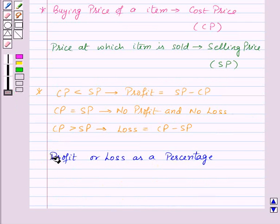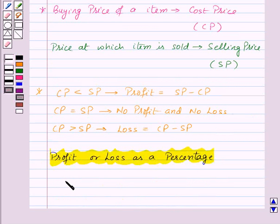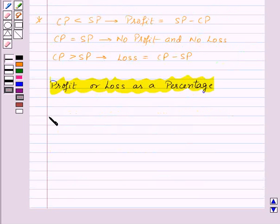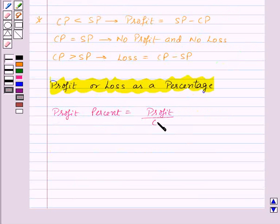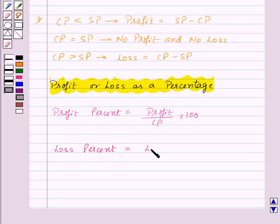Now let's see how to find profit or loss as a percentage. Profit and loss can always be converted into percentage and is always calculated on cost price. Profit percent is given by profit upon cost price into 100, and loss percent is given by loss upon cost price into 100.